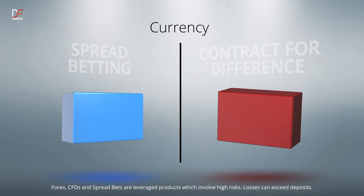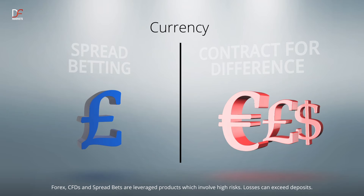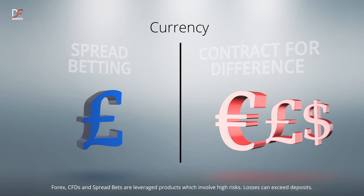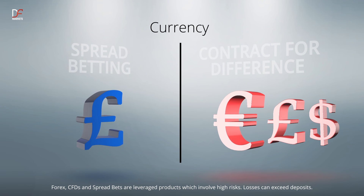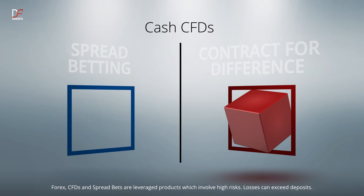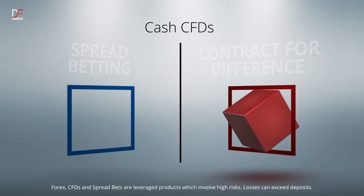Trading CFDs can get complicated when referring to the variety of currencies used. There is absolutely no currency risk when spread betting, because the only currency you use is the British Pound. Cash CFDs with 100% margin are only available when trading CFDs and not when spread betting.